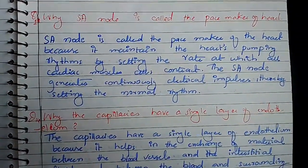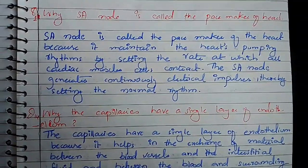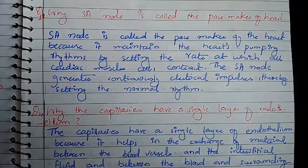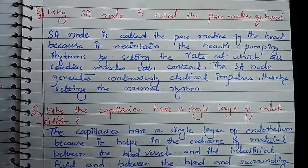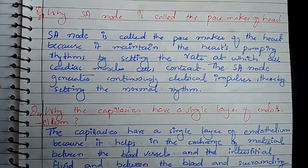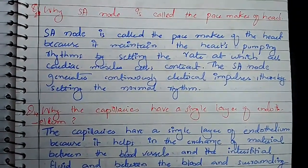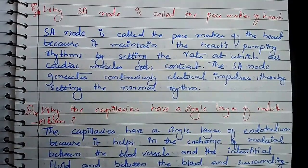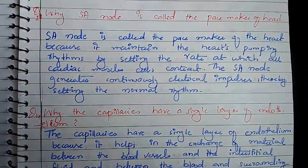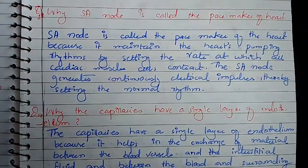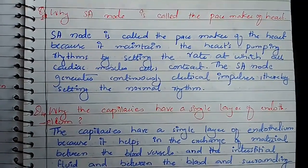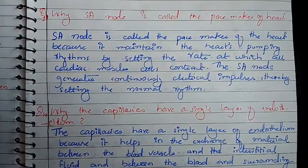Question number 13: why is the SA node called the pacemaker of the heart? SA node stands for sinoatrial node. It is in the atrium and below it is the AV node. The SA node is called the pacemaker of the heart because it maintains the heart pumping rhythm by setting the rate at which all cardiac muscles contract.